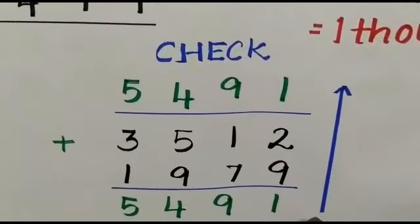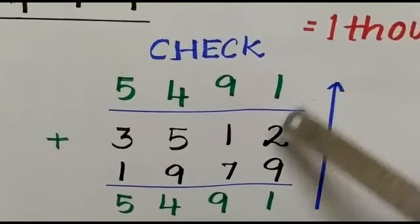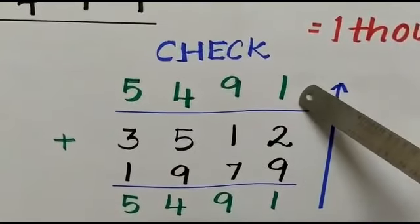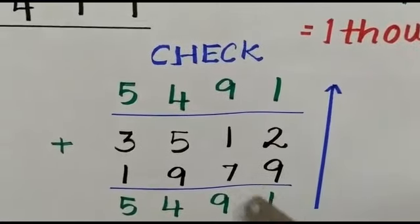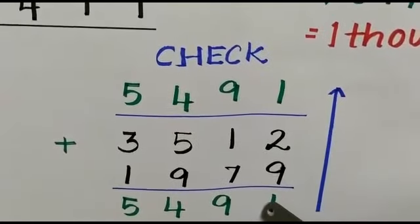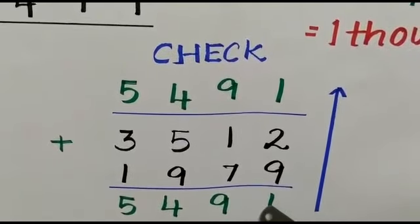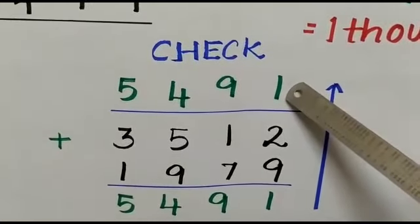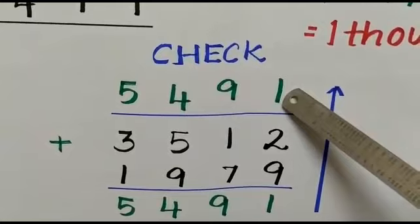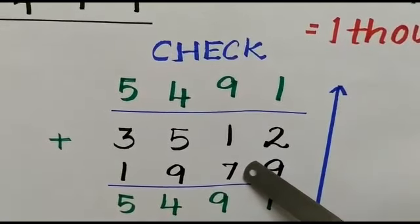Now we are going to add vertically up. When we add the digits vertically up also, we will get the same answer. So both the answers remain the same. So let us see. 9 plus 2 is equal to 11 ones. 1 and 1 ten will be carried forward.